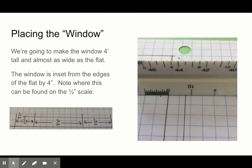It's going to be four feet tall and almost as wide as the flat and it's painted, not cut. So the window is inset from the edges by four inches and so notice where that is on the scale. That picture on the right you can see that four inches over is four little marks to the left of zero and then if you look at that bottom piece it shows you where the window placement is along that entire vertical axis.